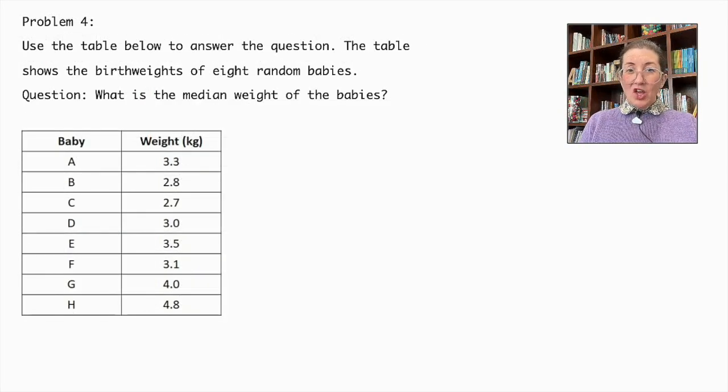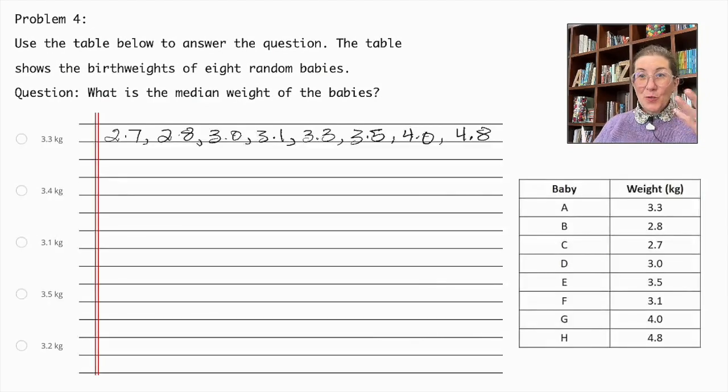Problem number 4. Use the table below to answer the question. The table shows the birth weights of 8 random babies. What is the median weight of the babies? So, what is the median number? The median number is the middle number when all of the numbers in the set are listed in increasing order. So, I've gone ahead and put all of our numbers in increasing order.